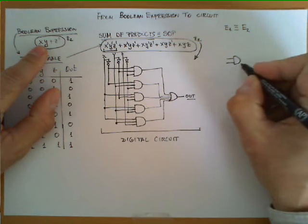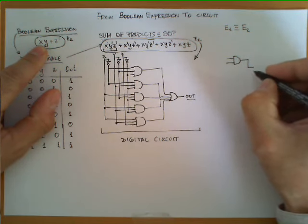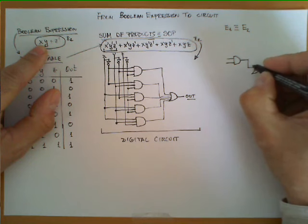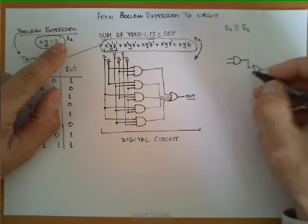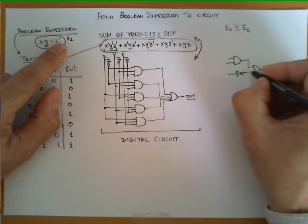X times Y times Y is an AND gate and this AND gate has a disjunction or an OR with Z prime but Z prime is this.